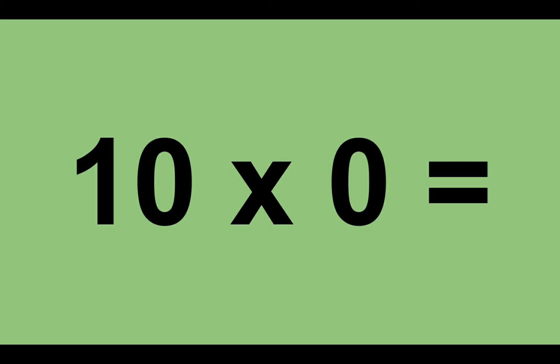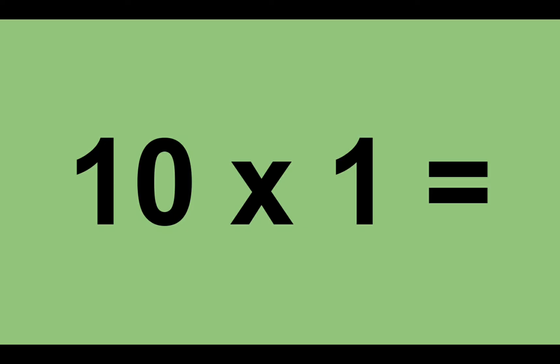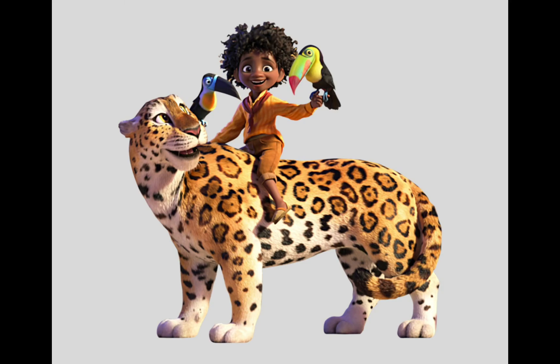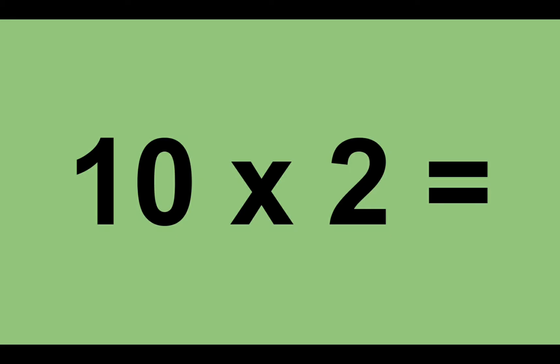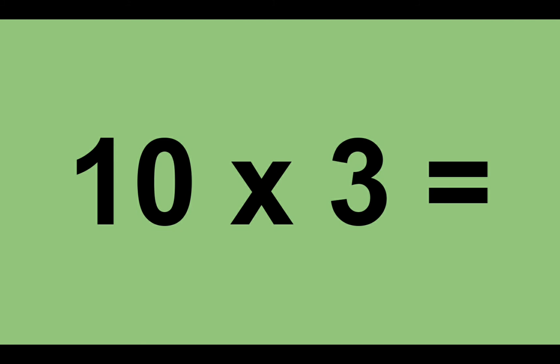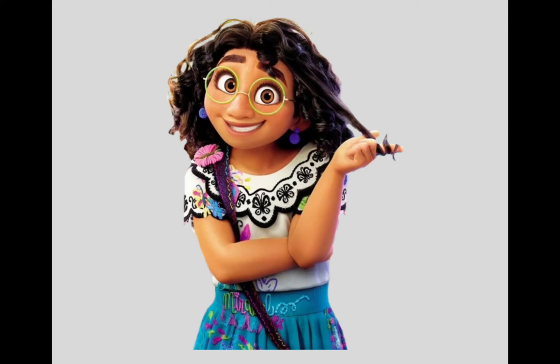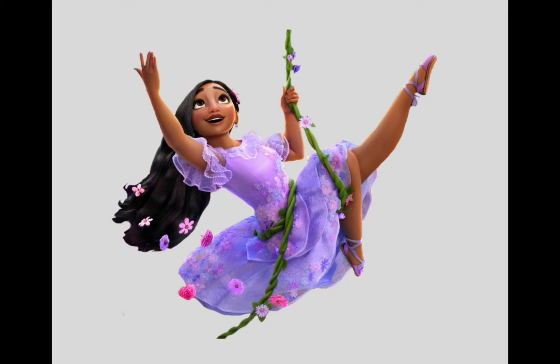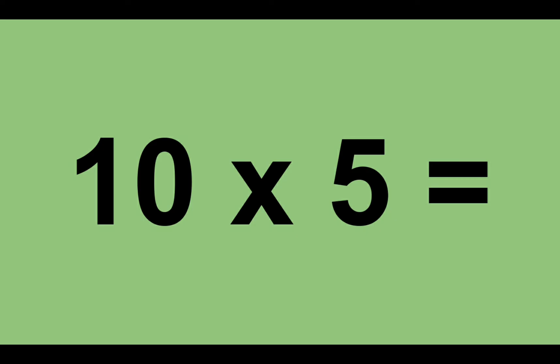10 times 0 equals 0. 10 times 1 equals 10. 10 times 2 equals 20. 10 times 3 equals 30. 10 times 4 equals 40. 10 times 5 equals 50.